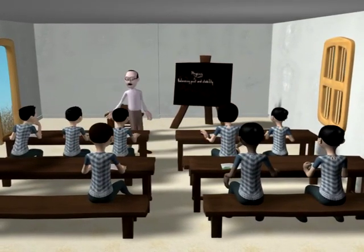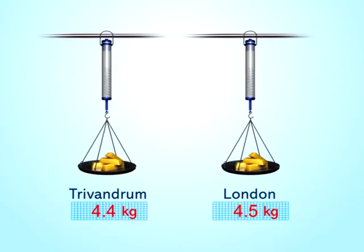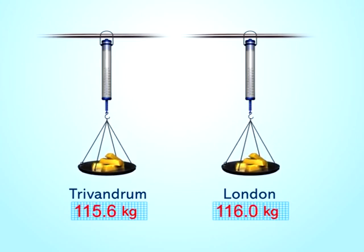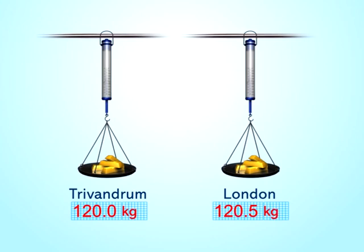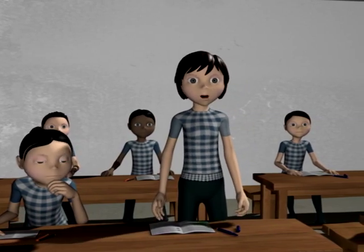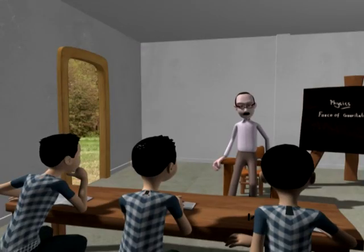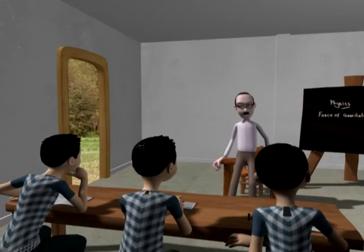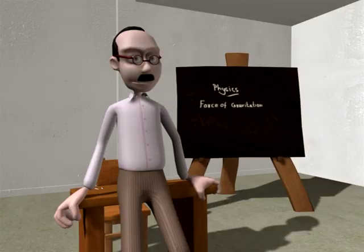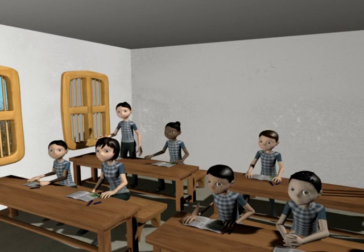125 kilograms of gold was taken from Thiruvananthapuram to London and was weighed there using a spring balance. It was found that there is an excess weight of approximately 0.5 kilogram. Is it not the same weight for a body at Thiruvananthapuram and London? The suspicious officers weighed it again using a common balance and found no difference. Why is this happening?